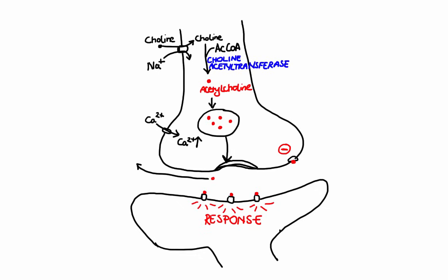In the fifth step, the enzyme acetylcholinesterase terminates acetylcholine function at the synaptic cleft by breaking it down to acetate and choline. Finally, in the sixth step, the free choline is taken up again by the presynaptic neuron and the whole cycle gets repeated.